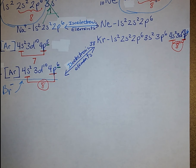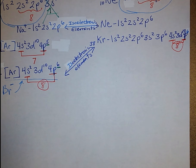This concludes my lecture for today, talking about noble gas notation, orbital notation, valence electrons, octet rule, Lewis dot structure, ions, and isoelectronic elements. Thank you.